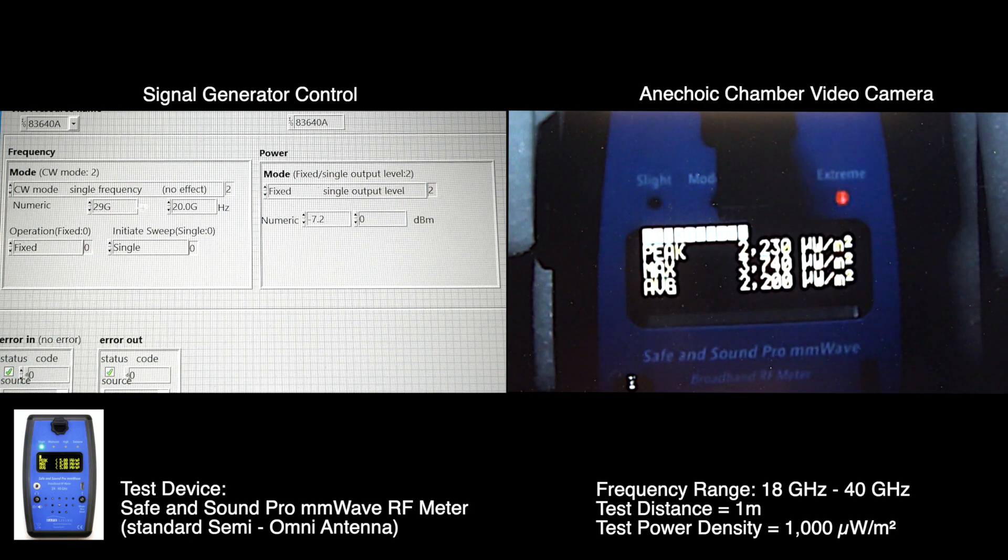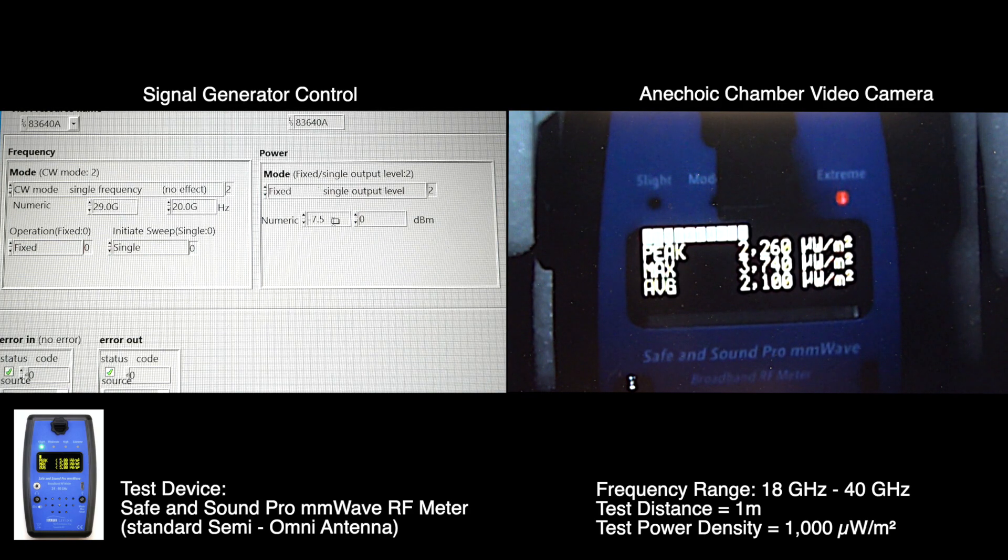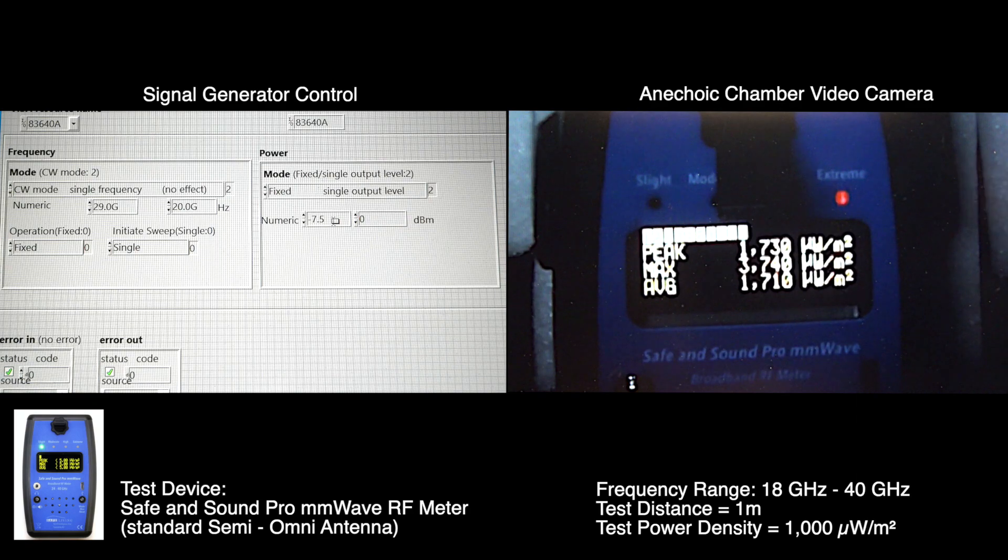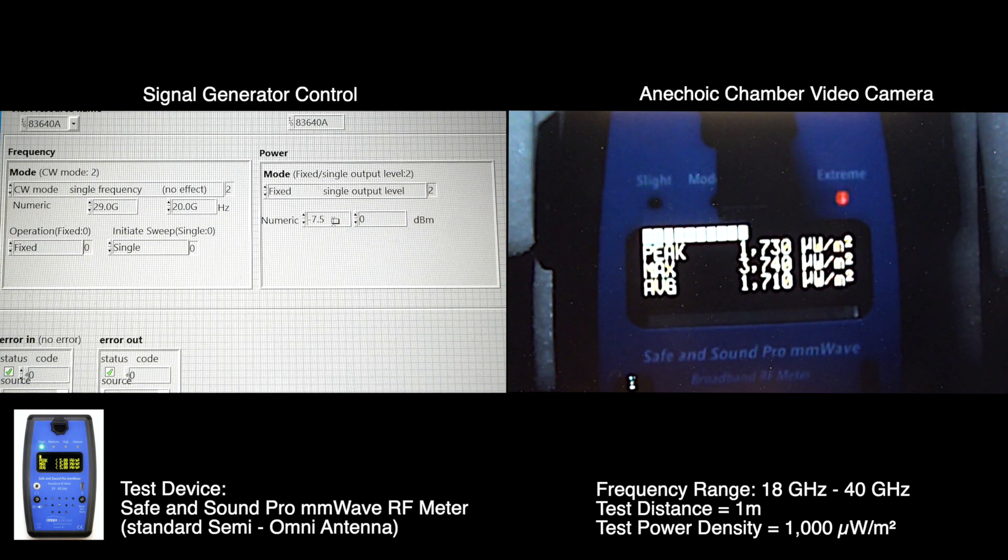29 gigahertz. Minus 7.5 dBm. 1710 microwatts per square meter. Again, we're using the average. This is a CW signal.